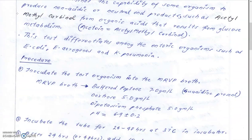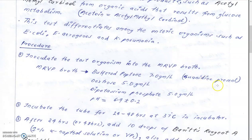Inoculate the test organism from the colony into the MRVP broth. For both the Methyl Red test and Voges-Proskauer test we use the same media, known as MRVP broth. The MRVP broth contains buffered peptone at 7 grams per liter, dextrose, and dipotassium phosphate, with a pH of 6.9 ± 0.2, adjusting the pH towards the neutral side. Any small changes will be resisted by the buffer, and large changes will be detected by the indicator. In buffered peptone there is a guanidine group present.